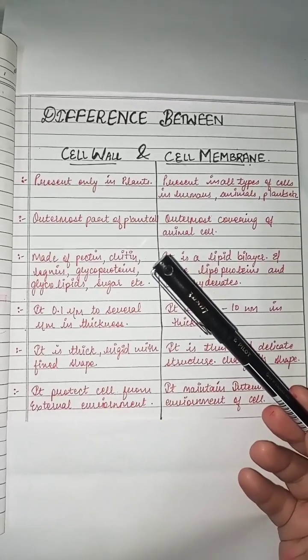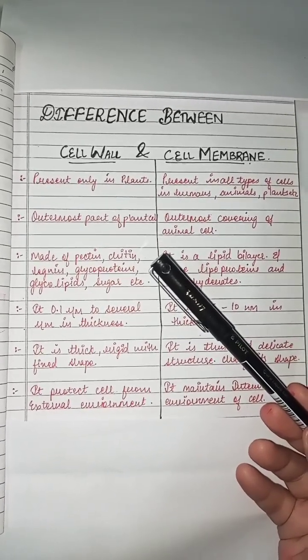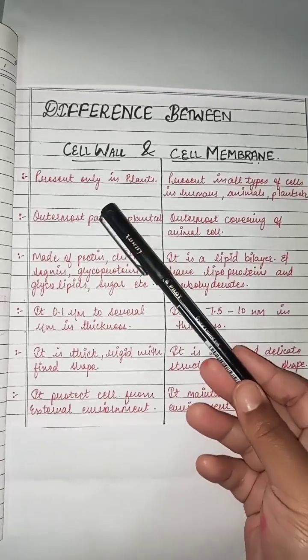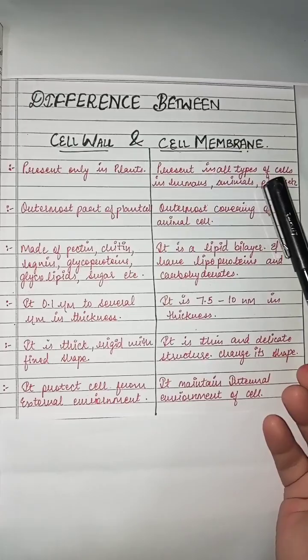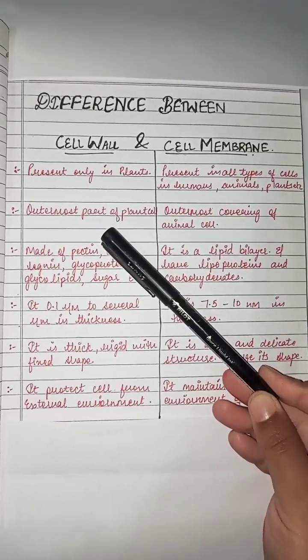Hello everyone, good evening. Today we'll learn about the difference between cell wall and cell membrane. Cell wall is present in plants, but cell membrane is present in humans, animals, and plants. It is the outermost...